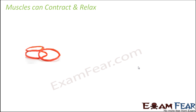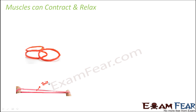So how do muscles contract and relax? We will take the example of a rubber band. When you take a rubber band and stretch it, it gets expanded — it becomes longer. And the moment it gets expanded, if you look at it, it becomes thinner.